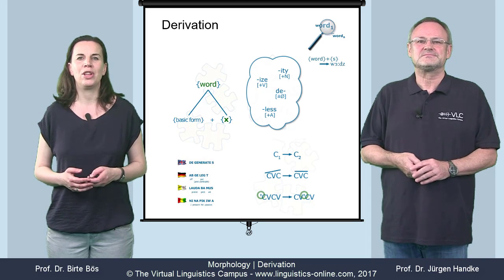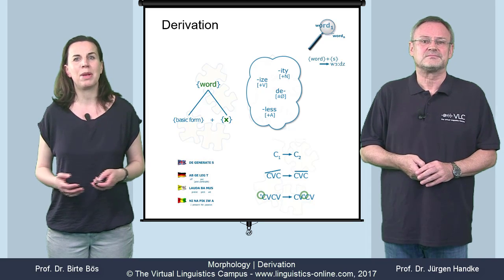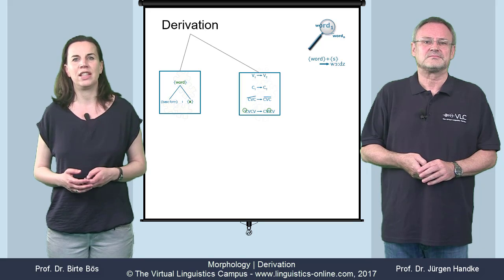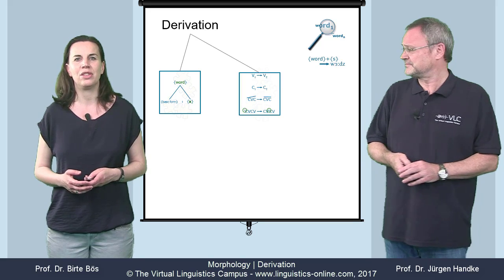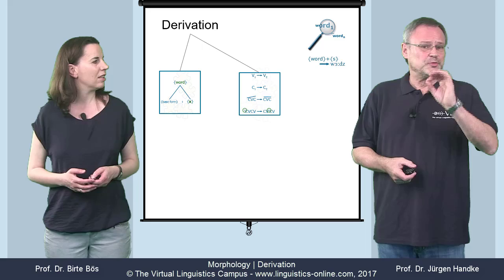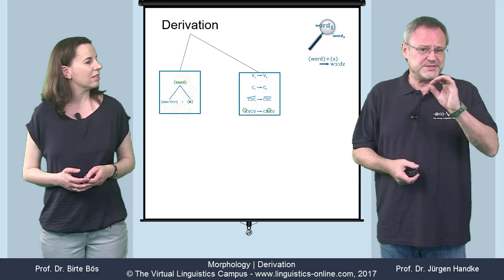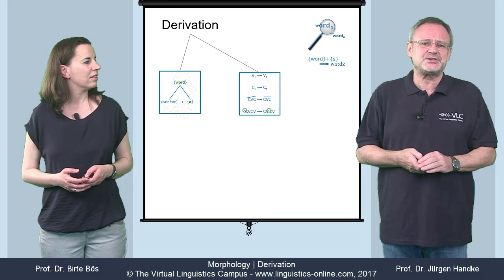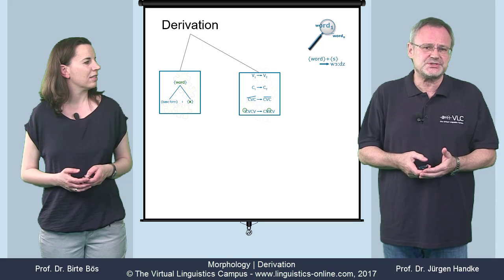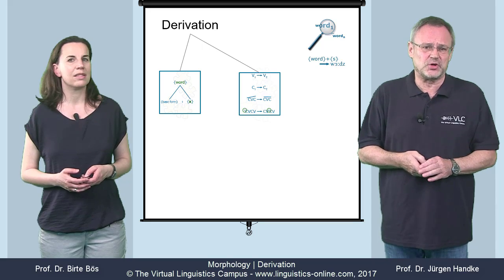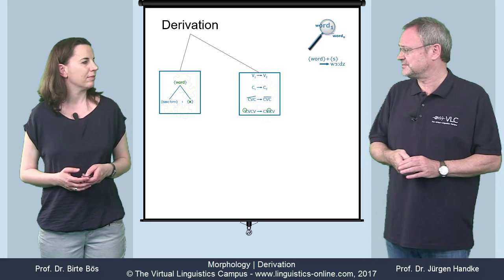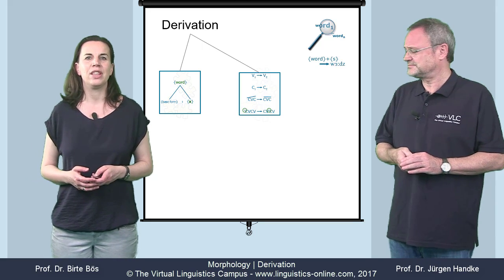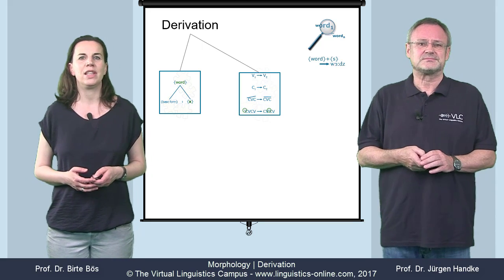Derivation is a morphological process that creates new words by means of concatenative as well as non-concatenative operations. To profit from this e-lecture, you should have watched our e-lectures on morphological processes and morphological operations first. The following types of derivation can be found in present-day English.